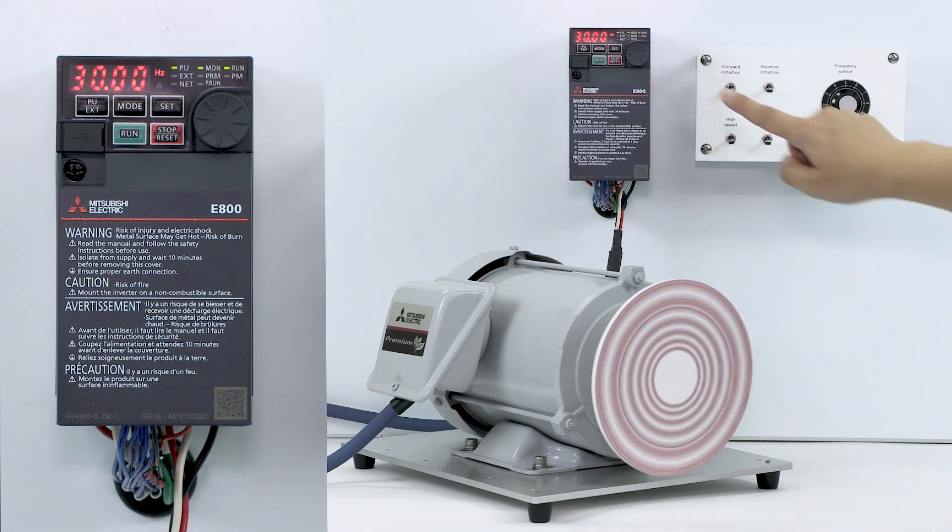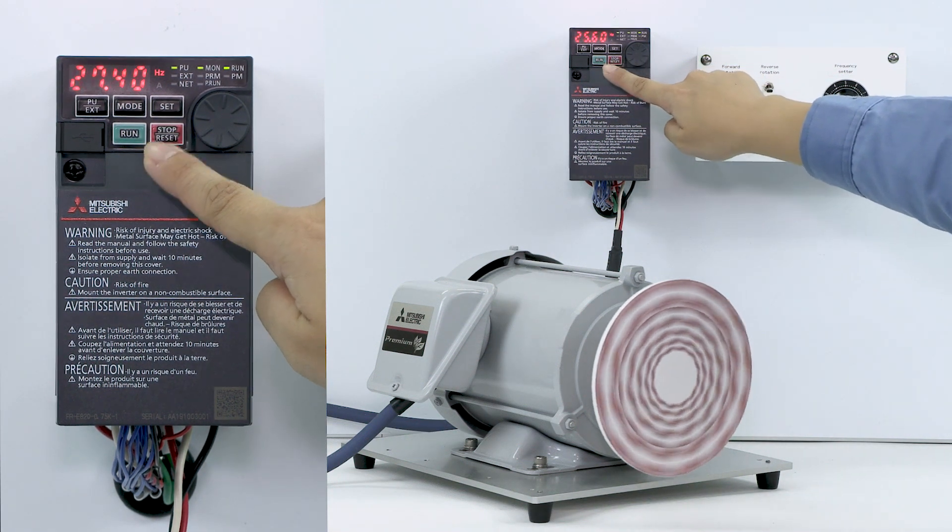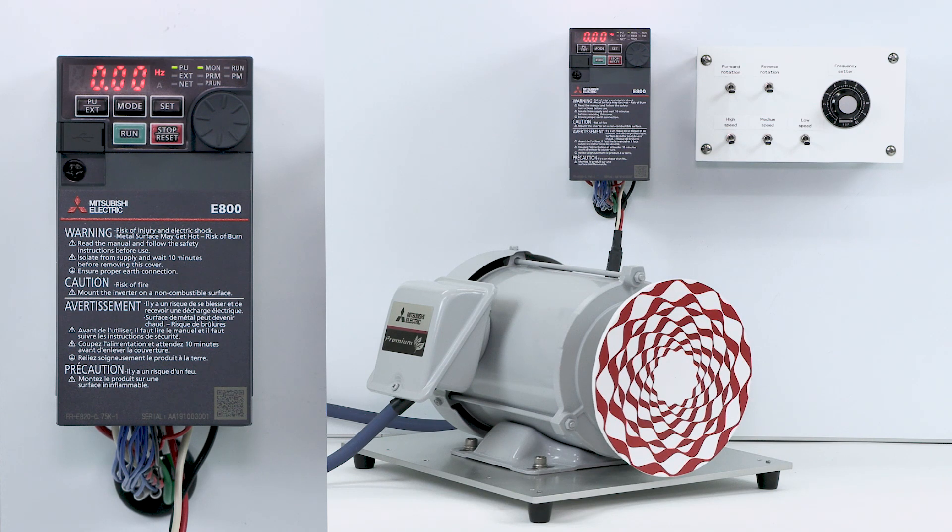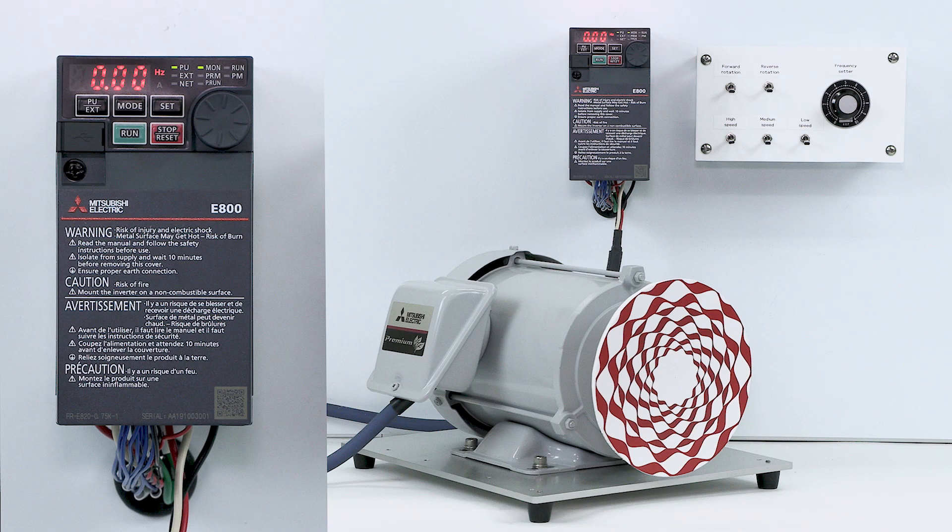To stop the motor, press the STOP RESET key. The frequency will decrease to 0, and the motor will stop. This completes instructions for driving the motor in the PU mode with the operation panel.